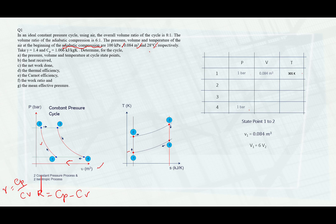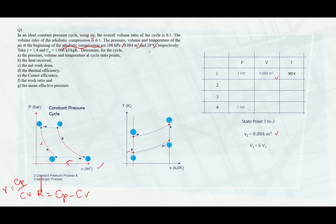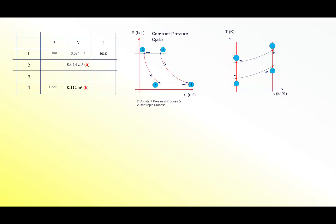Based on the adiabatic compression ratio given in the question — which is 6 to 1 — the compression process refers to points 1 to 2. Since we know the volume at point 0.1 is 0.084 metre cubed, we take V1 equals 6 times V2. So to find V2, take V1 divided by 6: 0.084 divided by 6 gives V2 equals 0.014 metre cubed. Put that into the table.